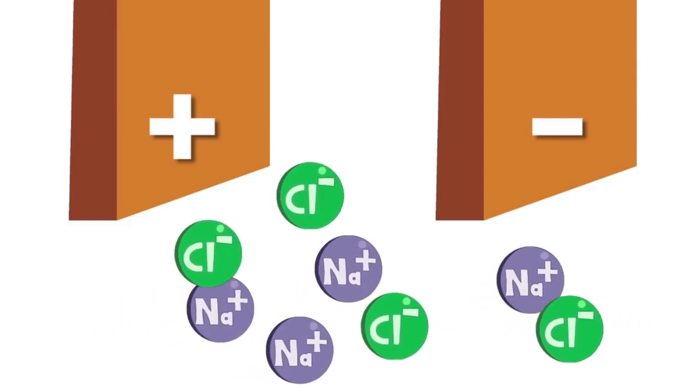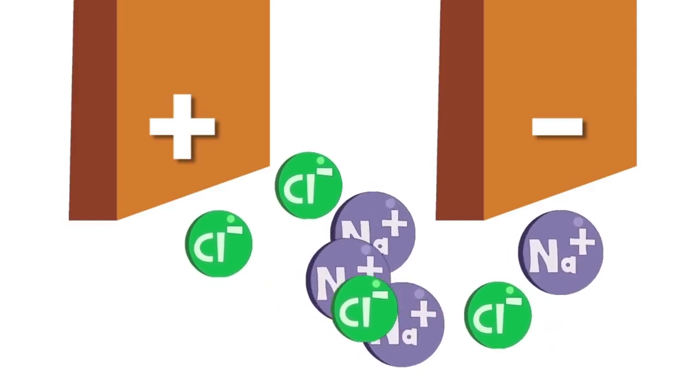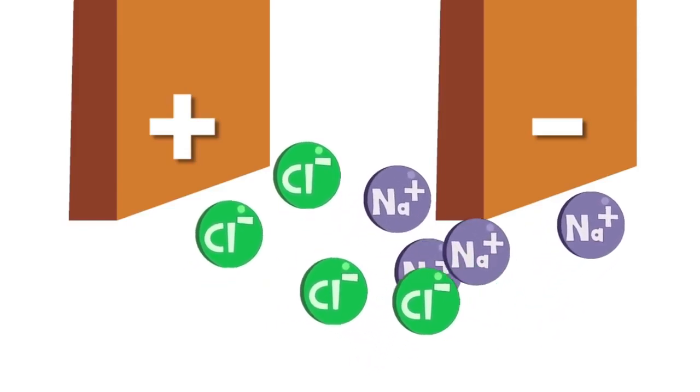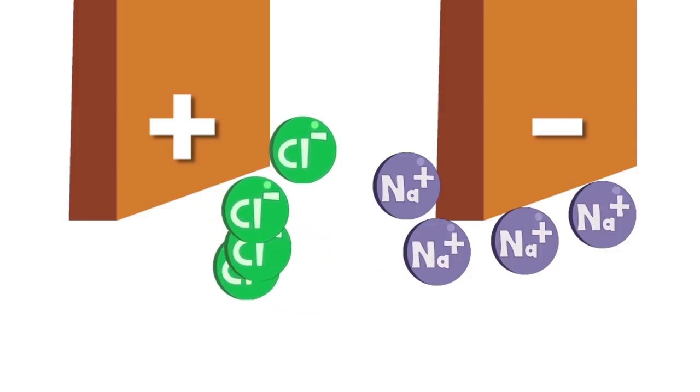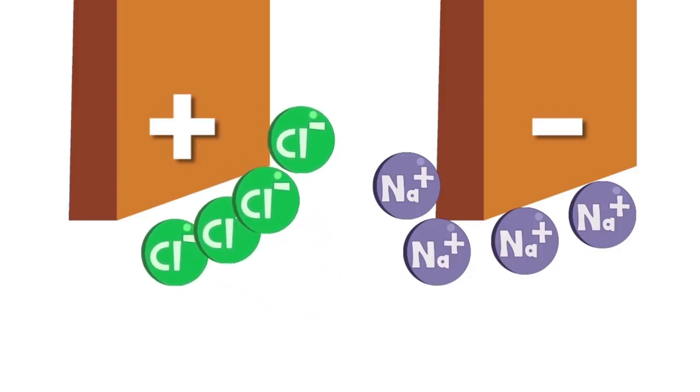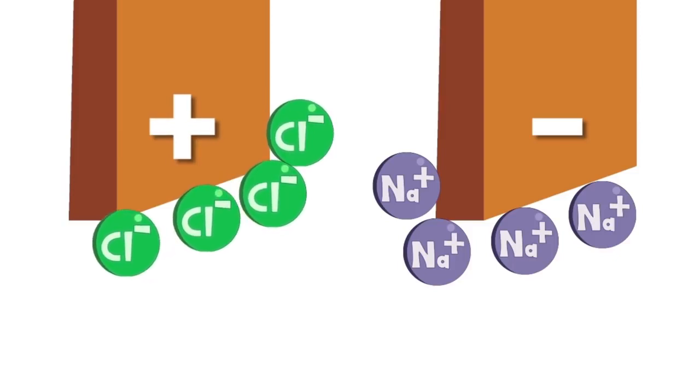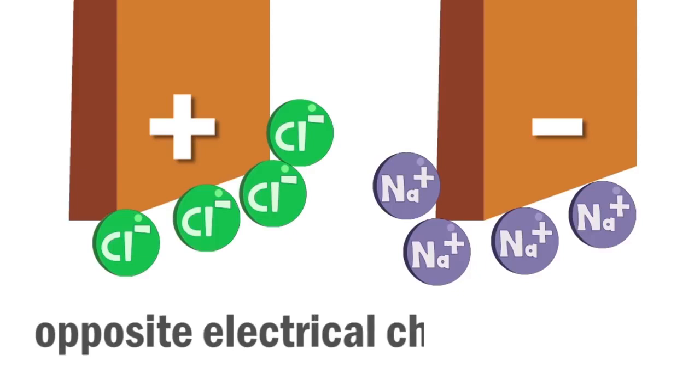Anything positively charged in the liquid, in this case the sodium ions, is going to be attracted to the positive electrode. This is because opposite electrical charges attract.